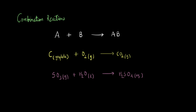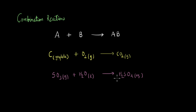Another example of a combination reaction is the reaction of sulfur trioxide with water giving aqueous H2SO4. This reaction may look unfamiliar, but you probably have heard of it — this is what leads to the phenomenon called acid rain, where industrial pollutants containing SO3 in the atmosphere react with water in rain, resulting in acid rain. But this is also an example of a combination reaction.